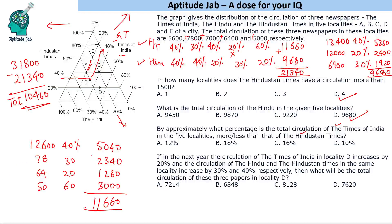The question asks by what percentage Times of India is more or less than Hindustan Times. Hindustan Times is more — approximately 11,660 versus 10,460 for Times of India, a difference of roughly 1,200. That 1,200 out of approximately 12,000 is roughly 10%, so the answer is approximately 10%.